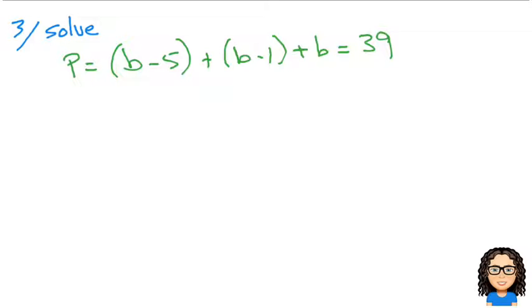I'm going to ignore the P at the start—that just helped me come up with the formula. So b - 5 + b - 1 + b = 39. I've just dropped the bracket symbols. Now let's combine that together.